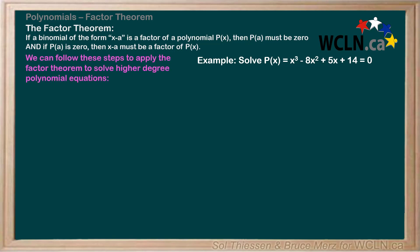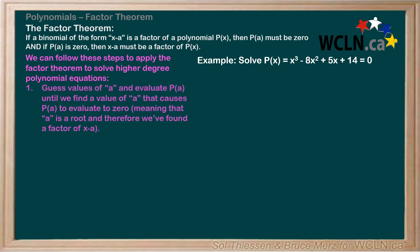We can follow these steps to apply the factor theorem to solve higher degree polynomial equations. Step 1 comes from the factor theorem. It tells us to guess values of a and evaluate P(a) until we find a value of a that causes P(a) to evaluate to zero, meaning that a is a root and therefore we've found a factor of x minus a.